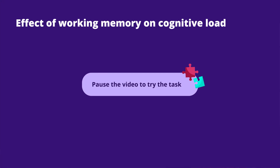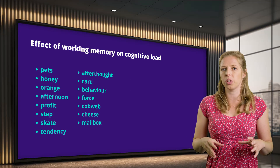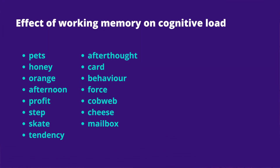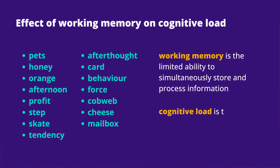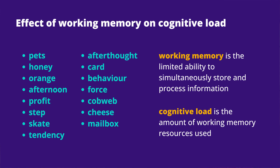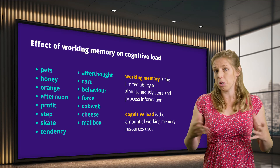Great, well done for giving that a go. What you've just done is a psychological experiment that was conducted by Miller. What Miller was trying to measure was our ability to remember information — it was called our working memory. You can think of working memory as the part of your brain that can hold information while simultaneously processing it and remembering it. It's a little bit like RAM on a computer. The thing about working memory is it is finite — there is only so much that we can hold in our mind at any one given time. What Miller found in this experiment was that people could remember somewhere between five and seven bits of information. So if you remembered five to seven words, that means you're roughly average in terms of most people's working memory capacity.